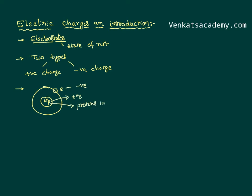Protons are strongly bonded inside the nucleus. There is a nuclear force because of which they are very strongly attached to the nucleus, so it is not possible for the protons to come out for the sake of charging a body. Therefore, it is the electrons which are loosely associated with the nucleus — particularly the electrons at the outer orbits, called valence electrons — that are loosely attached and are always ready to move from one place to another. Charges transfer when one body is rubbed with another; this is called charging by friction.